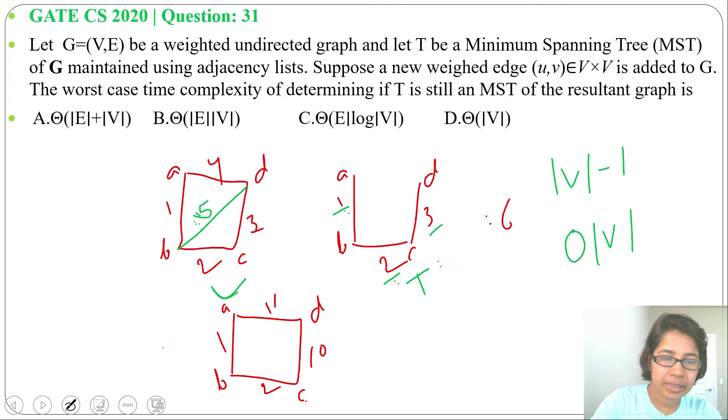Suppose in this same graph, C, D and A, D weights are different. Like C, D weight is 10 and A, D weight is 11. Now we'll construct minimum spanning tree. So minimum spanning tree will be AB weight is 1, BC weight is 2, CD weight is 10.